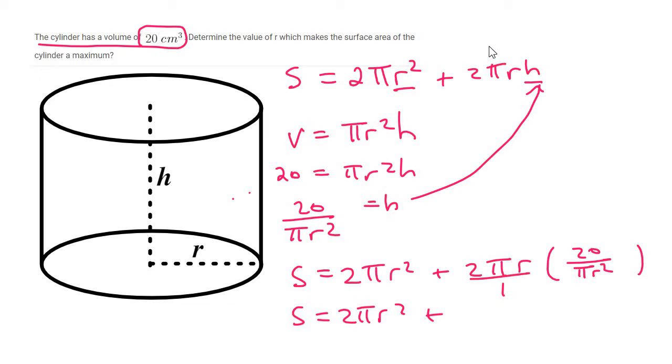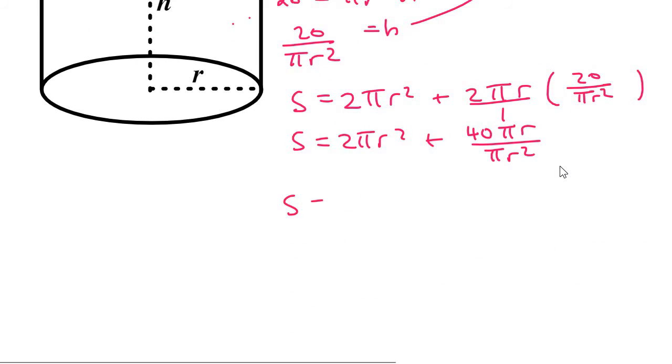Now you just want to multiply top and top and bottom and bottom. So that's going to become 40 pi R over pi R squared. We can then simplify this as the pi's would cancel and one of the R's would cancel at the top and bottom. And so you'd be left with 40 over R.